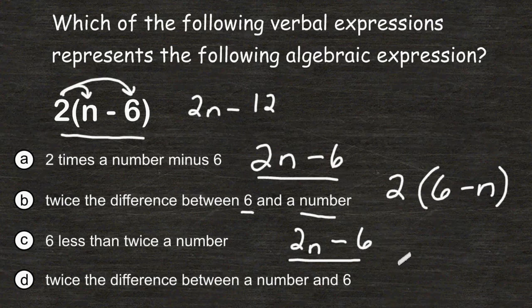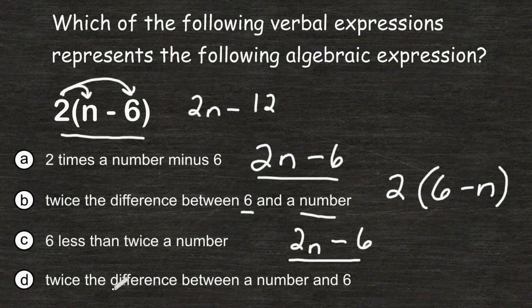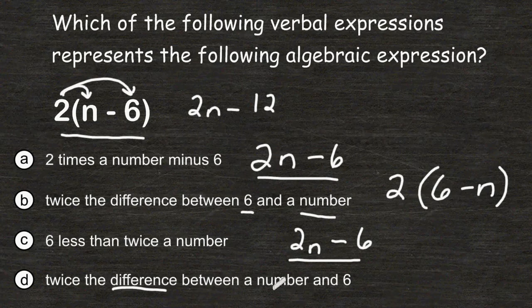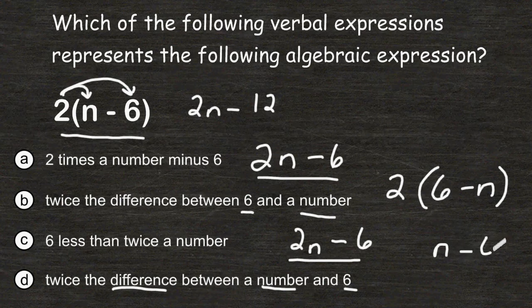Choice D reads twice the difference between a number and 6. So difference means to subtract, and we have to subtract a number and 6, so we will let n be a variable that represents a number minus 6, and we have to take twice that difference.